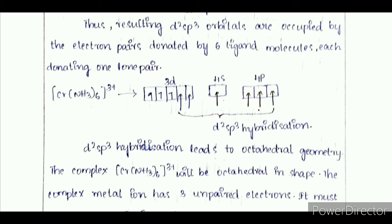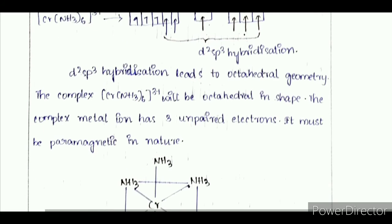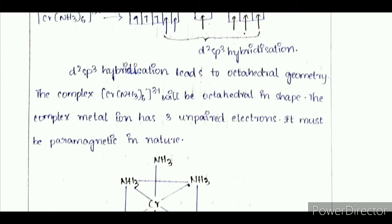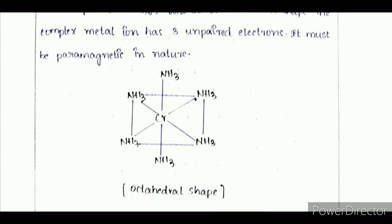d2sp3 hybridization leads to octahedral geometry. The complex hexaamminechromium(III) [Cr(NH3)6]³⁺ will be octahedral in shape. The complex metal ion has 3 unpaired electrons and must be paramagnetic in nature.